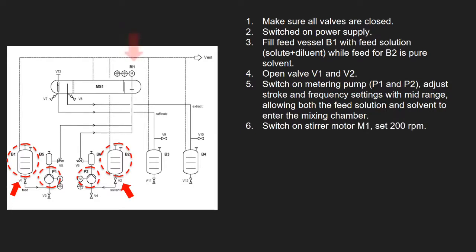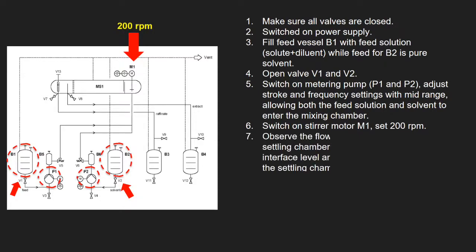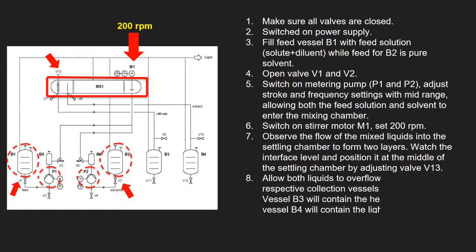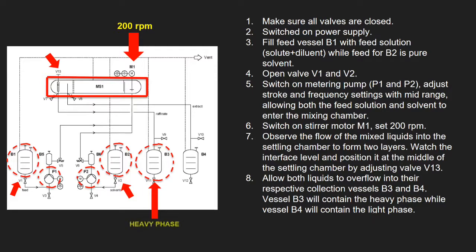Switch on the stirrer motor M1 and set the speed to about 200 RPM. Observe the flow of the mixed liquid into the settling chamber to form two layers. Watch the interface level and position it at the middle of the settling chamber by adjusting valve V13. Allow both liquids to overflow into their respective collection vessels B3 and B4. Vessel B3 will contain the heavy phase while Vessel B4 will contain the light phase. The unit is now ready for experiment.